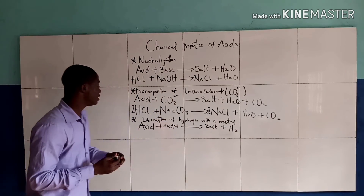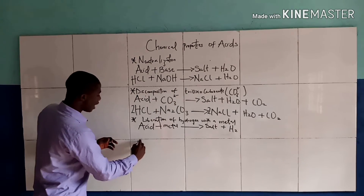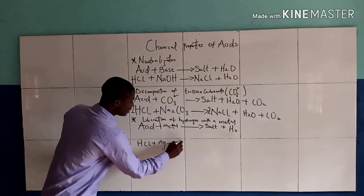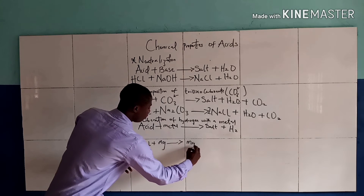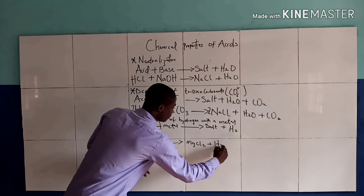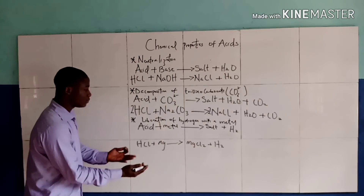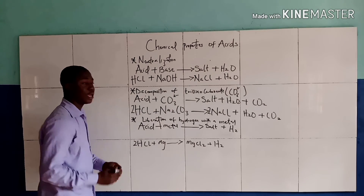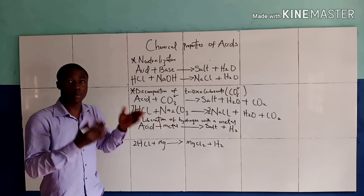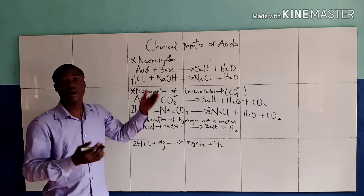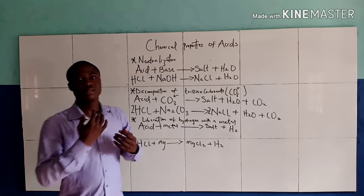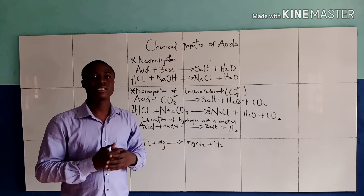For example, hydrochloric acid reacts with a metal like magnesium, and we get magnesium chloride and it liberates hydrogen gas. Let's balance the reaction — the equation is balanced. So all of these are some chemical properties of an acid. My name is Brett Edo, and thanks for watching.